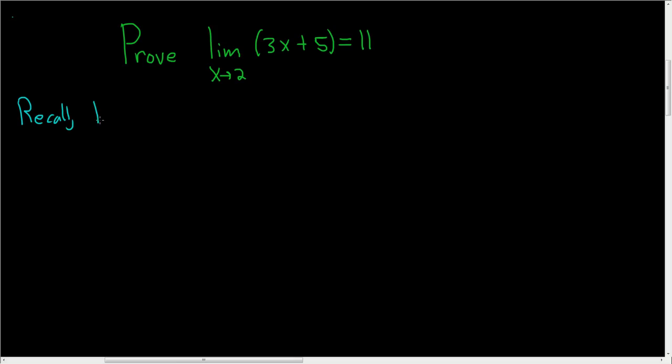So recall the limit of f of x as x approaches a is equal to l. Well, this is equivalent to the statement: for all epsilon greater than 0, we can find some number delta greater than 0,